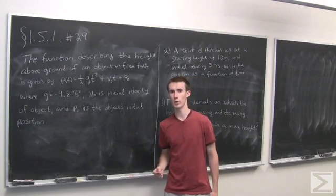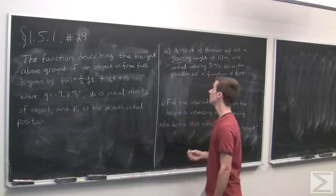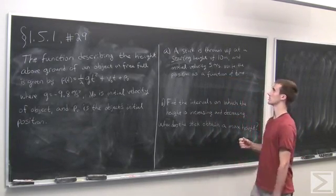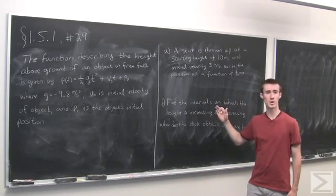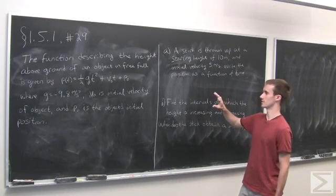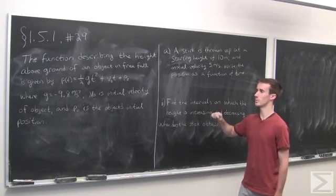where g is minus 9.8 meters per second squared. So our first part asks us to write down a function that gives us position at time t.